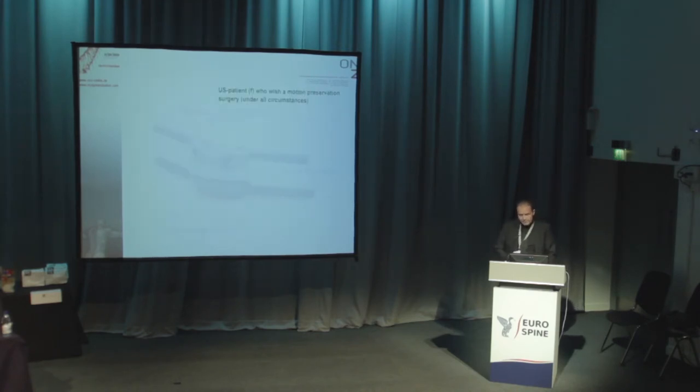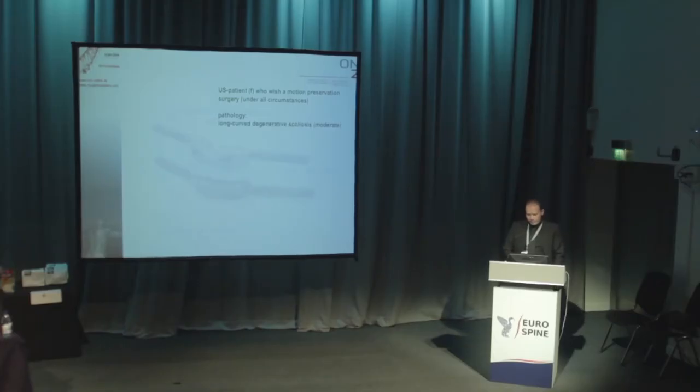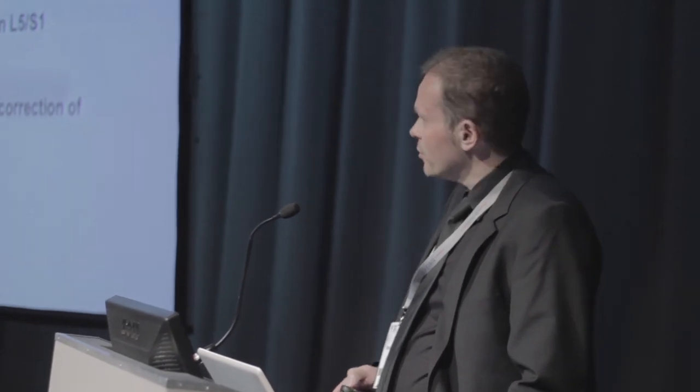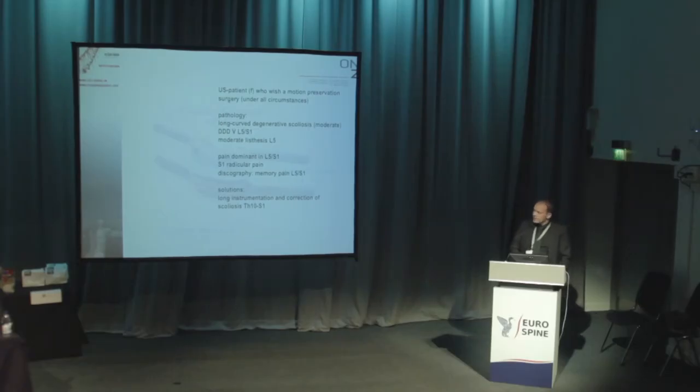The next patient was a 50 or 55-year-old woman from the US. She wants to have also motion preservation technologies. Her pathology was very complex, so she had a long curve degenerative scoliosis, moderate, and severe degeneration degree 3 of the Pfirrmann classification in L5-S1 and showed a moderate listesis in L5. The pain was dominant for the segment L5-S1 with an S1 radicular pain and with total concordant pain in L5-S1 in a discography. Normally the solution we offer the patient is a long instrumentation and correction of the scoliosis from TH10 to S1.